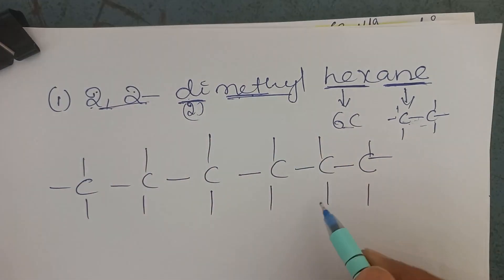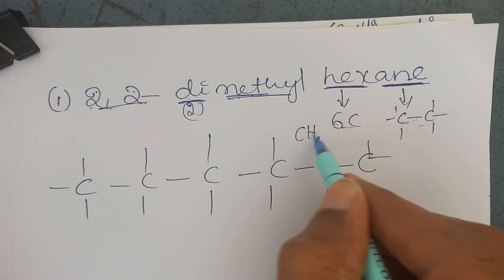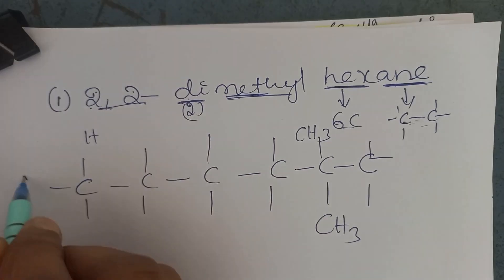To the second one, 2 methyls. Methyl formula is CH3 and CH3. Remaining are joined with hydrogens.